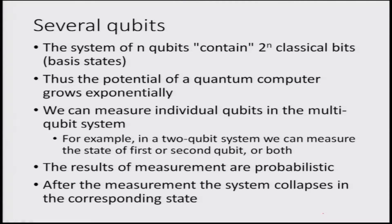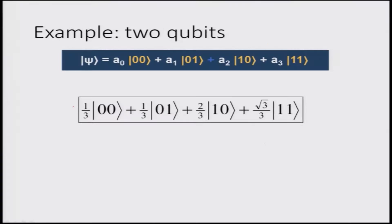In general, a subsystem of n qubits would contain 2ⁿ classical bits as basis states, which means that the potential of a quantum computer would grow exponentially. We can measure the individual qubits in a multi-qubit system. For example, in a two-qubit system we can measure the state of the first or the second qubit or both. The results of measurement are probabilistic, and after the measurement the system collapses into the corresponding state.